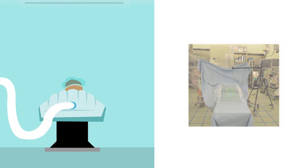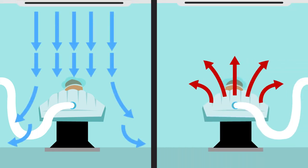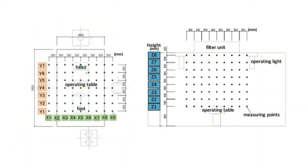The team then assessed the airflow in the room with and without forced air warming and in the presence and absence of laminar flow. Air speed and direction were measured at 504 different points in the room.